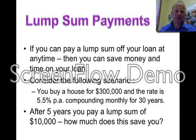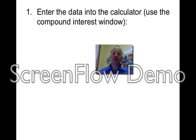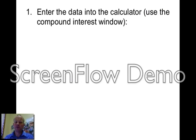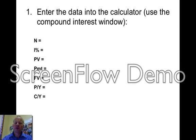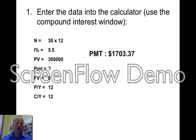So you're probably thinking, how do we solve that? Well, the same thing is you've got to enter the data into the calculator like normal. Because we've got to find out the payment, we always have to start with the payment. When we do that, we get a payment of $1,703.37 per month to pay off that loan normally.